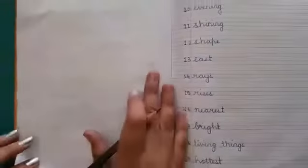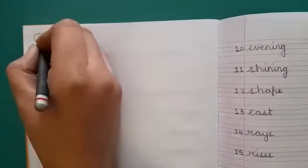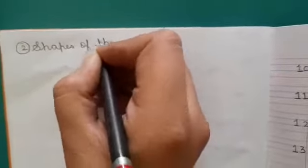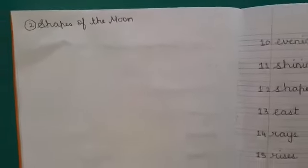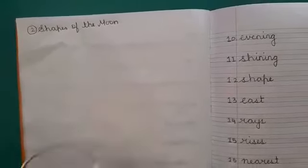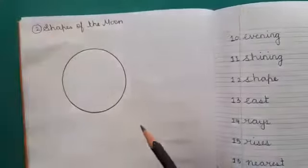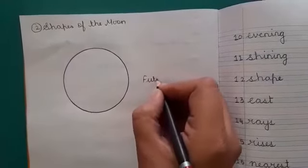Now turn your page. The second drawing is shapes of the moon. There are 3 shapes of the moon. Now we will draw. The first one is full moon.